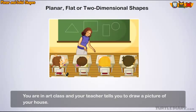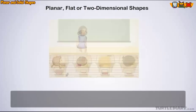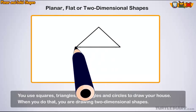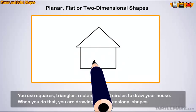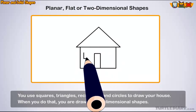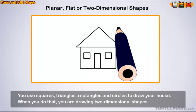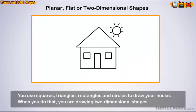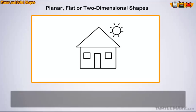You are in art class and your teacher tells you to draw a picture of your house. You use triangles, rectangles, squares, and circles to draw your house. When you do that, you are drawing two-dimensional shapes. The shapes are two-dimensional because they are flat on the paper.